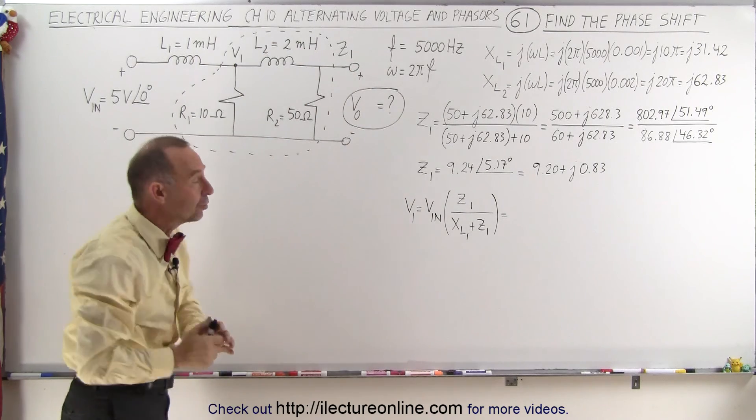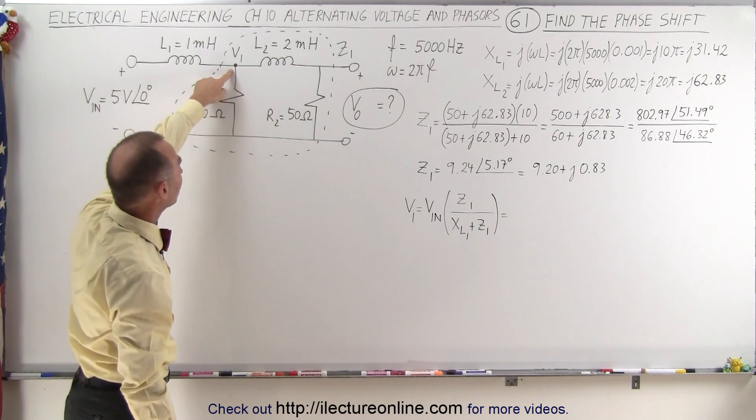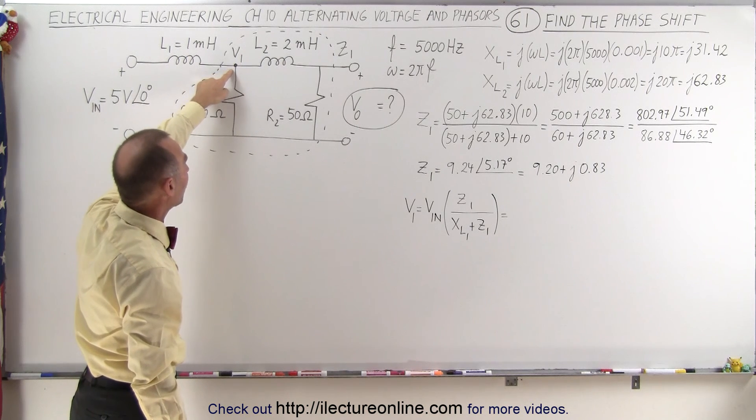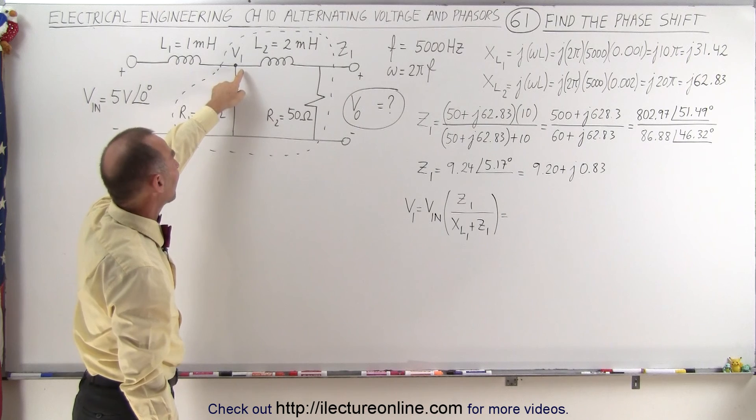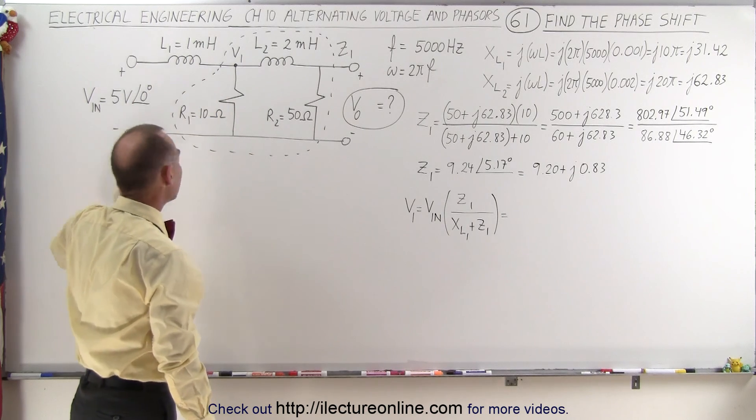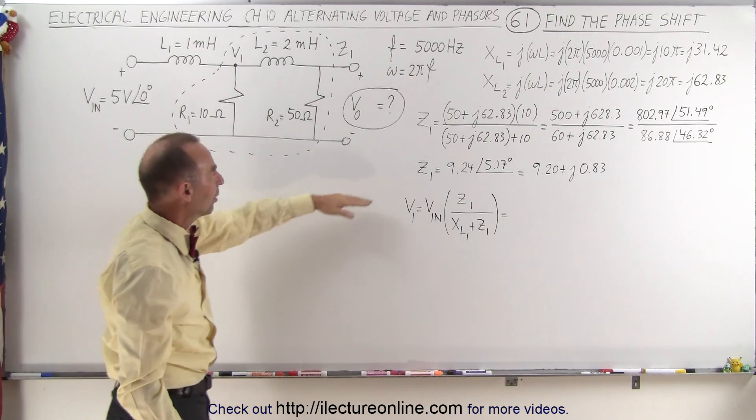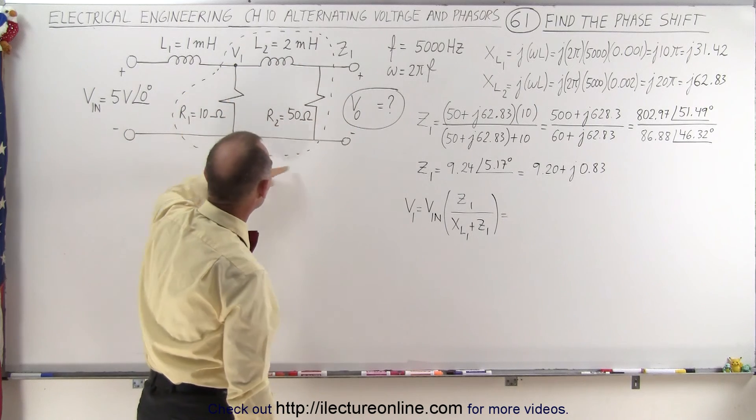Essentially what we're trying to do is find the voltage at this location so we can find the output voltage in terms of V1, and then we can find V1 in terms of the input voltage. Here, we already calculated the impedance of this circuit.